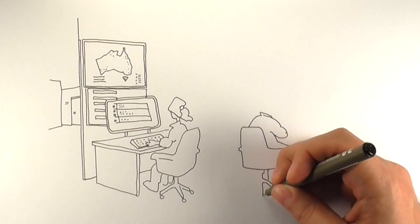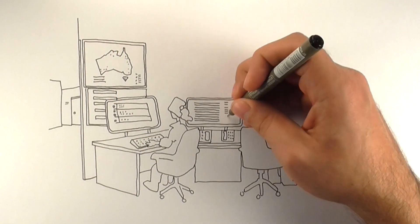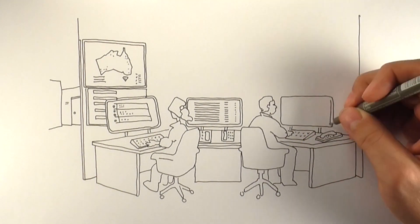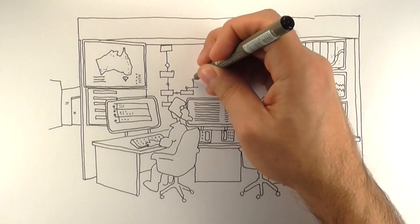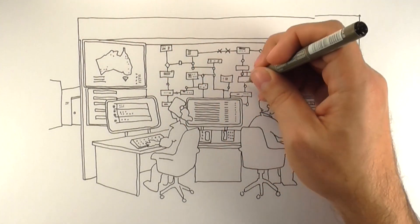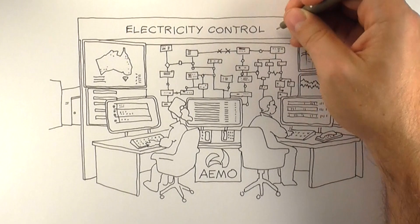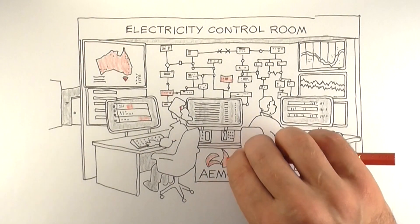AEMO monitors and manages two of the largest, critical, and complex power systems in the world, 24 hours a day, seven days a week, so that consumers across the country can continue to have a safe, secure, and reliable energy supply.